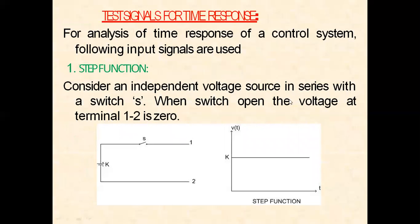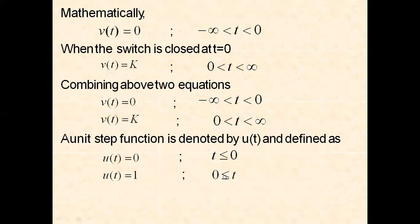Test signals for time response. For analysis of the time response of a control system, the following input signals are used. The first one is called the step function. Consider an independent voltage source in series with a switch. When the switch is open, the voltage at terminals one and two is zero. Mathematically, the voltage V(t) is zero when t is in the range minus infinity to zero.